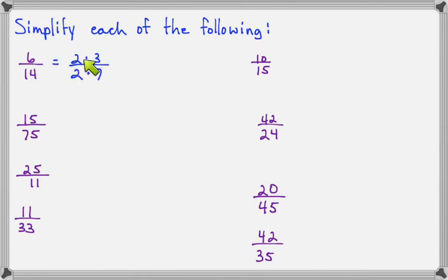So in this case, the top could be written as 2 times 3. The bottom could be written as 2 times 7. I see a 2 in the top and the bottom. The 2s will cross out. And we're left with 3 sevenths. So 6 fourteenths simplifies to 3 sevenths.